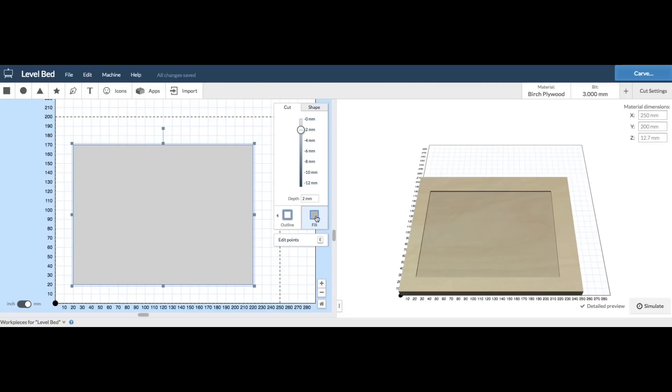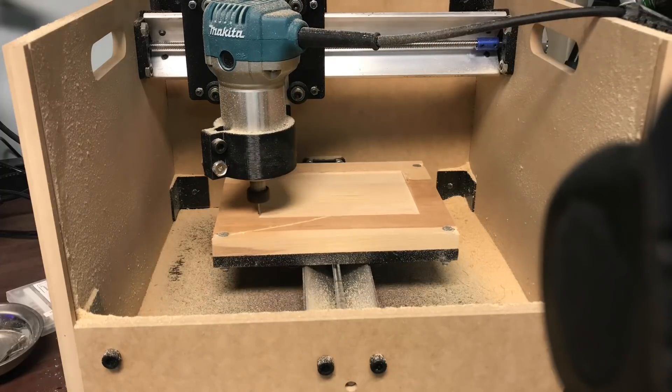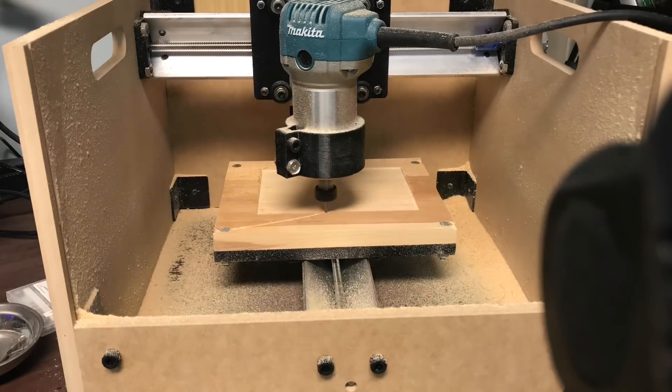So I went to Easel, brought in this block and set it to a two millimeter cut with a complete fill, and then I let it just router this guy out so I knew I'd have a perfectly flat base in order to cut my circuit boards.